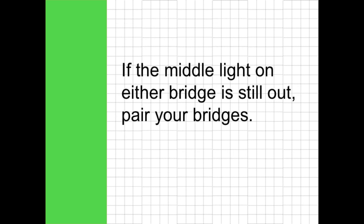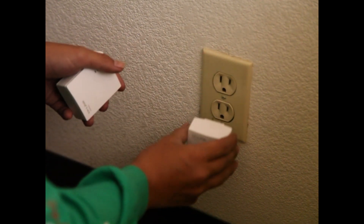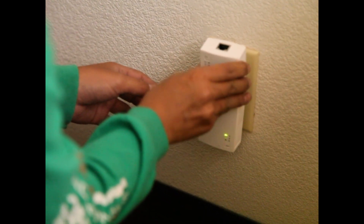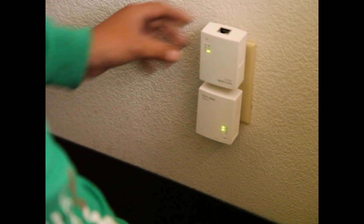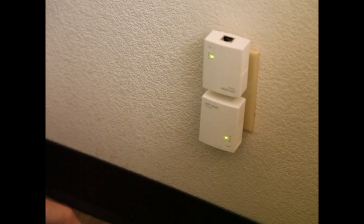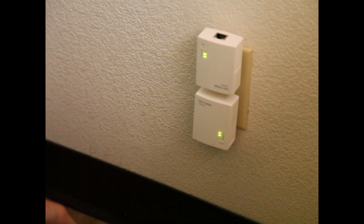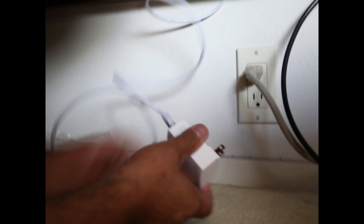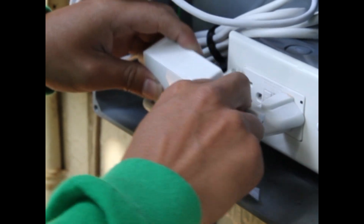If the middle light on either bridge is still out, you can try pairing your bridges. Plug both bridges into the same outlet and press the pair button on bridge 1 for 2 to 3 seconds and then release it. The power light on bridge 1 will start blinking. Upon releasing bridge 1's pair button, press the pair button on bridge 2 for 2 to 3 seconds and then release it. The top light and middle light on the bridges will blink, indicating that they are trying to pair with each other. Observe the light status on both bridges. If the top and middle indicators are lit, the bridge connection has been successfully created. Once the bridges have been paired, plug bridge 1 back into an outlet near the router and plug bridge 2 back into the box outside.